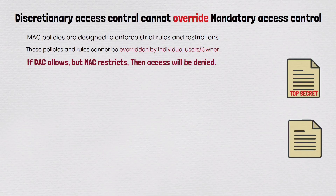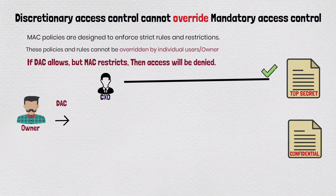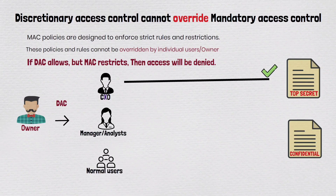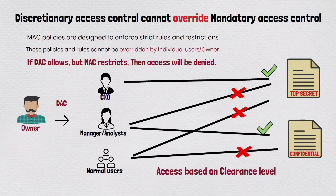Let's say you have a highly sensitive document with a top secret label. Under mandatory access control, only users with the top secret clearance level can access it, regardless of what permissions the owner of the document has set using discretionary access control. So even if the owner grants access to someone with a lower security clearance, the mandatory access control policies will enforce the restriction and deny access to that individual.